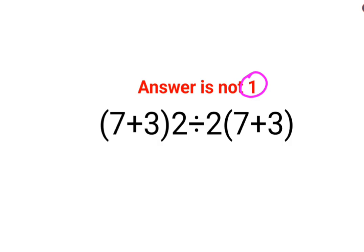We have 7 plus 3, then we have 2, and then we have divided by 2, and then we have 7 plus 3. So when you have something like this, you need to follow the rule of BODMAS or PEMDAS.